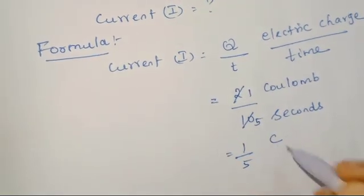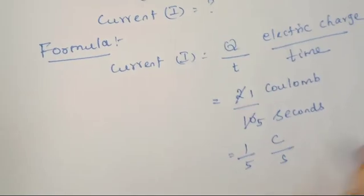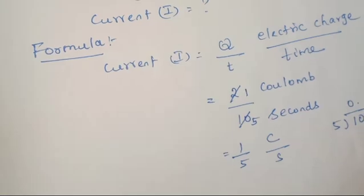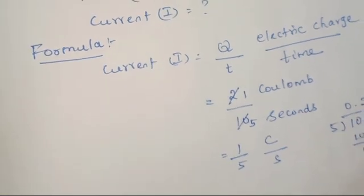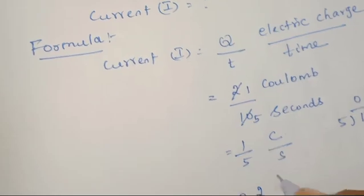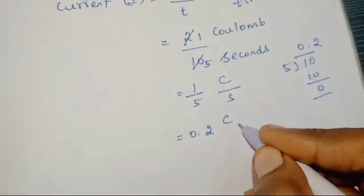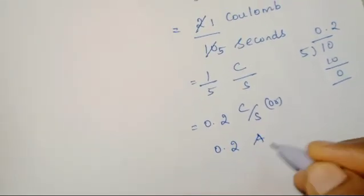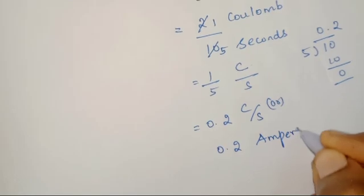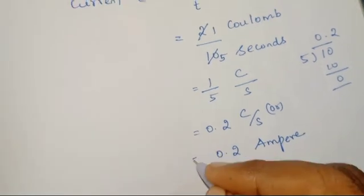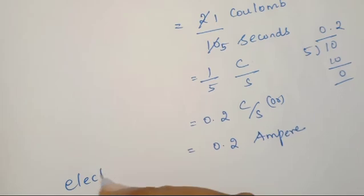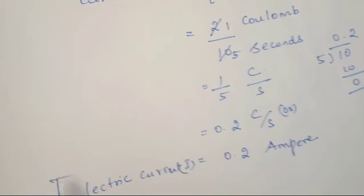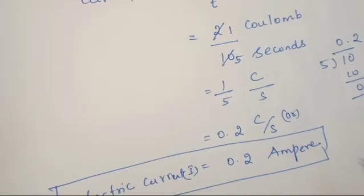So, it is 1 by 5 coulomb per second. 1 by 5 — we can divide it: 0.2, since 5 twos are 10. So the answer is 0.2 coulomb per second, or 0.2 ampere. Ampere is the unit of electric current. The final result is: electric current I is equal to 0.2 ampere.